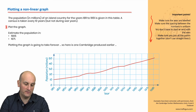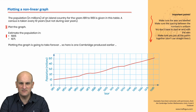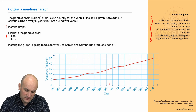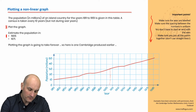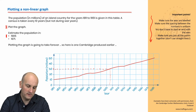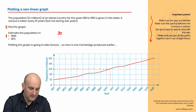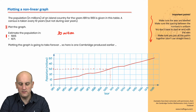To estimate the population in 1905: 1905 seems to be roughly here on the graph. Draw a line up and go across, and it would be approximately 30 million people. So I'd be writing 30 million.